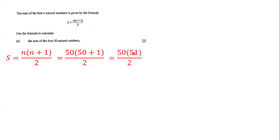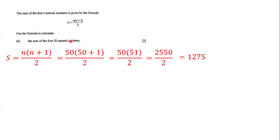So we have 50 times 51 all over 2, and 50 times 51 is equal to 2,550. We divide 2,550 by 2, which gives 1,275. So the sum of the first 50 natural numbers is equal to 1,275.